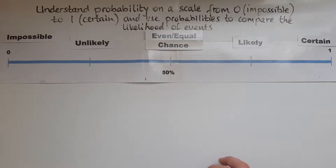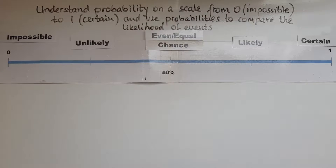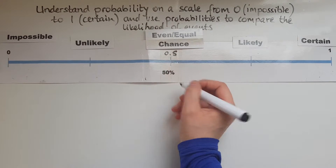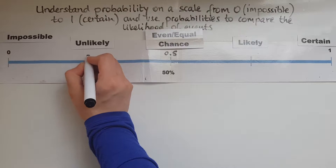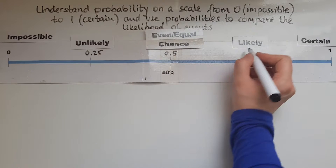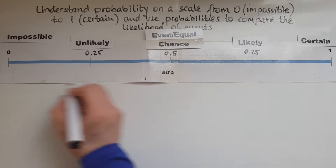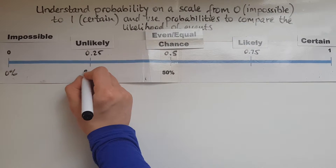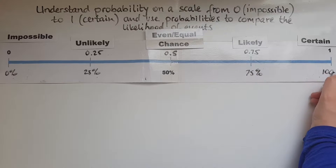The probability itself uses a scale and we write it as a decimal from zero to one. In the middle would be 0.5, which is 50 percent or a half. At 25 percent we write 0.25, and at 75 percent we write 0.75. As percentages: 0%, 25%, 50%, 75%, 100%.